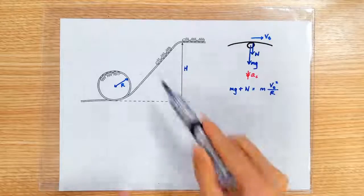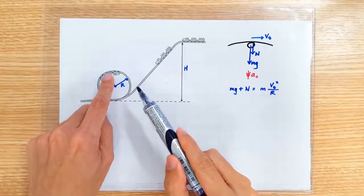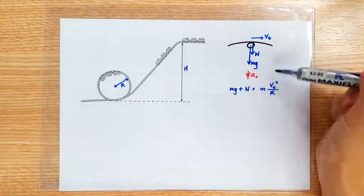For the roller coaster to just make the loop successfully is when it arrives at the top with such a speed so slow that the normal contact force is zero.